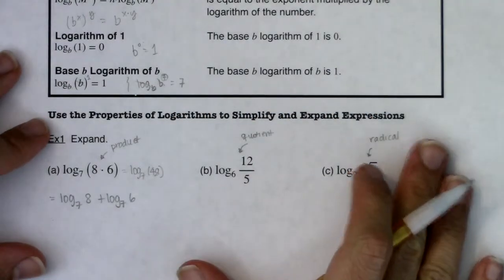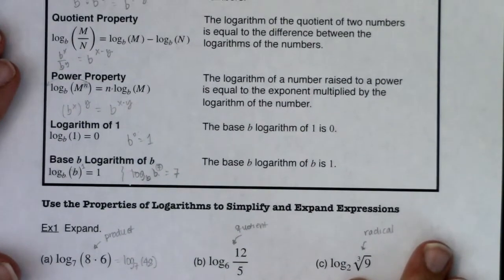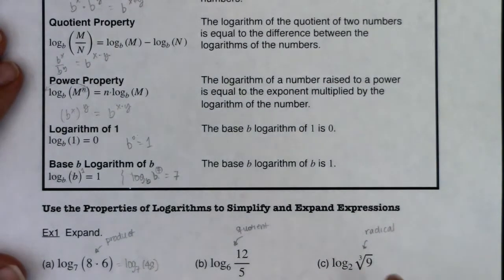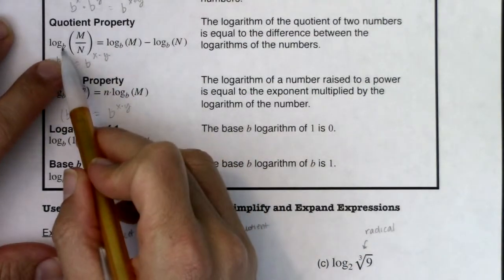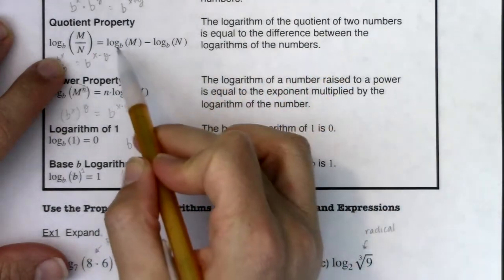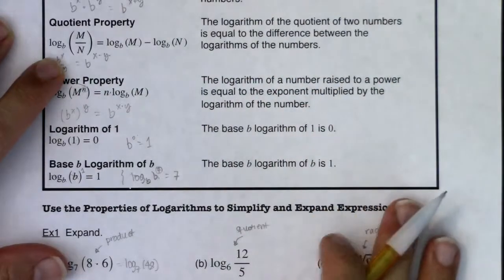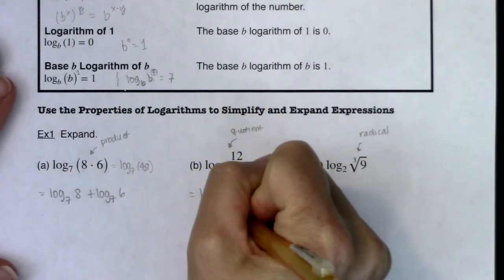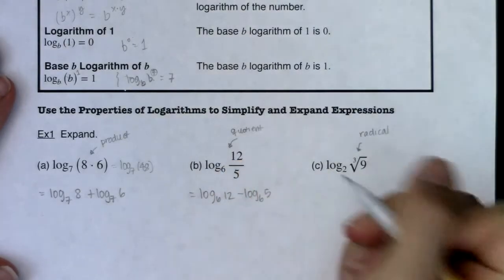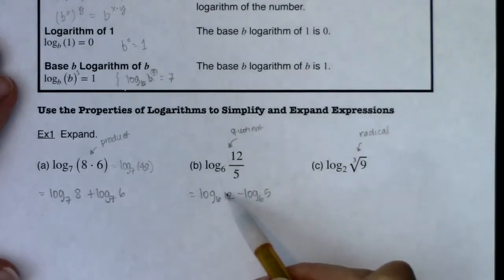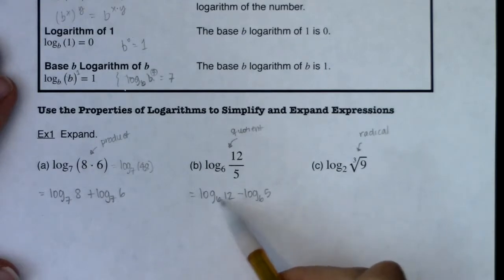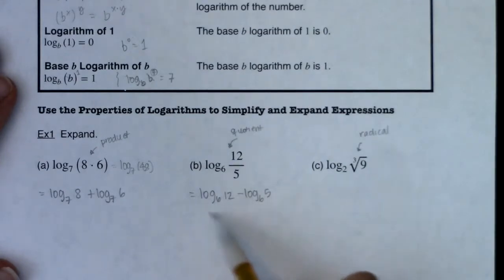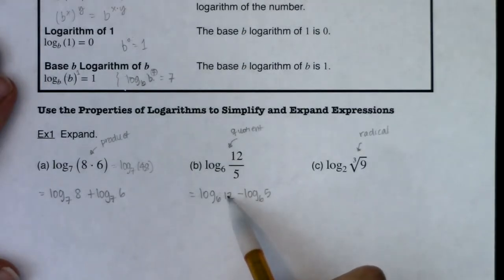For part B, we have log base 6 of 12 fifths. The argument is a quotient, so we use the quotient property. With b equal to 6, m equal to 12, and n equal to 5, this becomes log base 6 of 12 minus log base 6 of 5. We can't simplify further — 5 is not a power of 6, and 12 is not a power of 6. Even though 6 times 2 equals 12, logarithms deal with exponents, not multiplication, and 6 squared is 36, not 12.